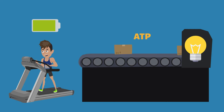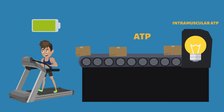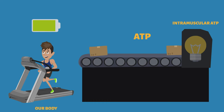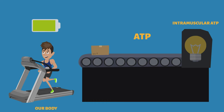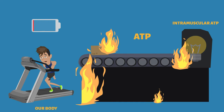Our muscle cells contain a small amount of ATP, termed intramuscular ATP, that can be released rapidly to power the start of exercise. However, this intramuscular ATP is limited and depletes after a few seconds of exercise.